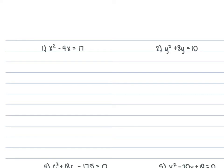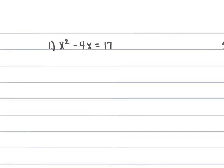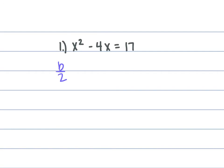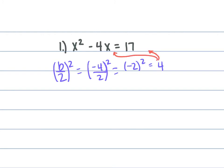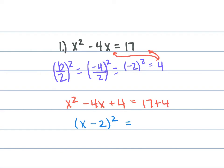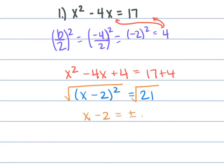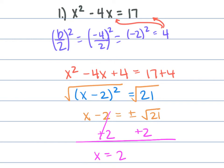For extra practice problem 1, we have x squared minus 4x equals 17. b is negative 4, so b over 2 squared: negative 4 over 2 squared is negative 2 squared, which is 4. Add 4 to both sides: x squared minus 4x plus 4 equals 17 plus 4. Factor to get x minus 2 squared equals 21. Take the square root: x minus 2 equals plus or minus the square root of 21. Add 2 to both sides: x equals 2 plus or minus the square root of 21.